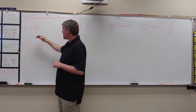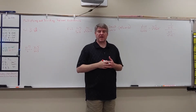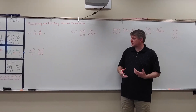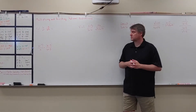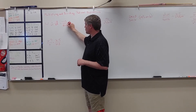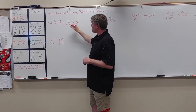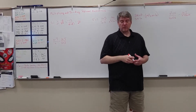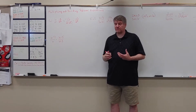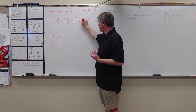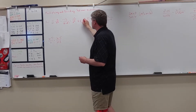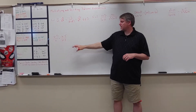Our first example is 6 over a squared times negative 2 over a cubed. There's nothing that can be factored, so I'm going to multiply straight across. 6 times negative 2 gives me negative 12. And then a squared times a cubed gives me a to the 5th — when multiplying with powers, I add those powers. So this gives me negative 12 over a to the 5th. For domain restrictions, a cannot equal 0.